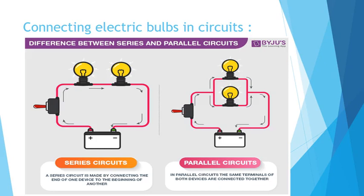Now, how can we connect the lamps in a circuit, or how to connect electric bulbs in circuits? We have two ways to connect the lamps in a circuit: either series connection or parallel connection. On the left you can see the series connection, and on the right you can see the parallel connection. Series connection means the lamps are side by side, one after the other, all connected in the same route or on the same wire.